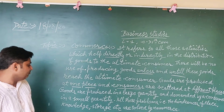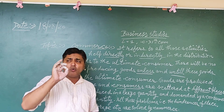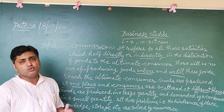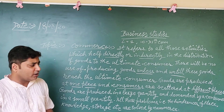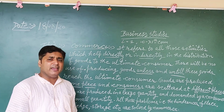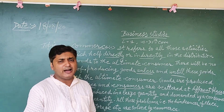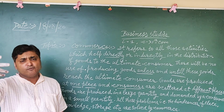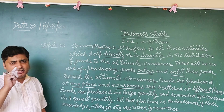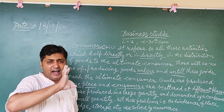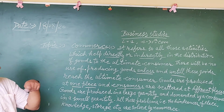Goods are produced in large quantities. The producer never produces in small quantities; he always produces in large quantities — and he does so when the demand by the consumer arises. The producer manufactures in bulk and sells to the wholesaler, who sells to the retailer. Goods are produced in large quantity and demanded by the consumer in small quantity.